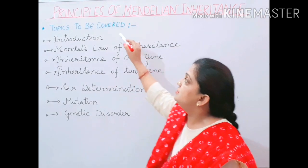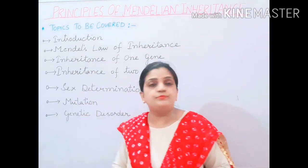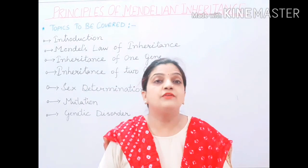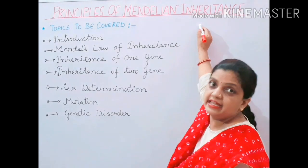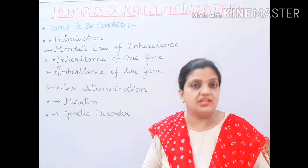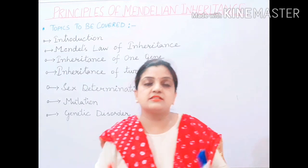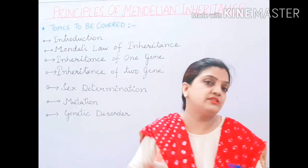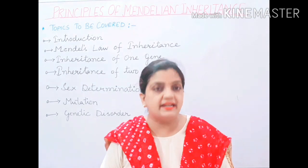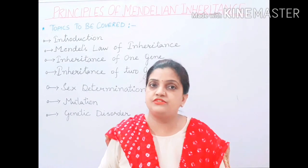The name of the chapter is principles of Mendelian inheritance. The term 'principles' means rules — different types of rules made to study Mendelian inheritance. 'Mendelian' refers to Mendel, a scientist in genetics. 'Inheritance' means all those characters which are transferred from one generation to the next. So in this chapter we study the rules framed by Mendel for the transfer of characters from one generation to another.